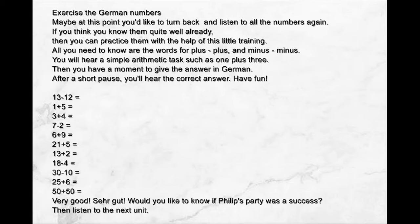Maybe at this point you'd like to turn back and listen to all the numbers again. If you think you know them well already, you can practice them with this little training. All you need to know are the words for 'plus' — plus — and 'minus' — minus. You will hear a simple arithmetic task, such as '1 plus 3', then give the answer in German. After a short pause, you'll hear the correct answer. Have fun! 1 plus 5 = sechs. 3 plus 4 = sieben. 7 minus 2 = fünf. 6 plus 9 = fünfzehn.